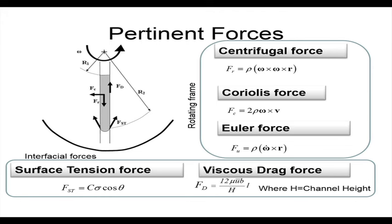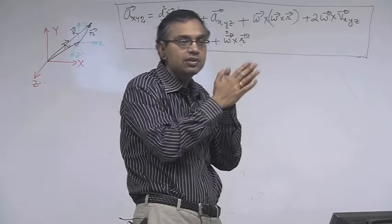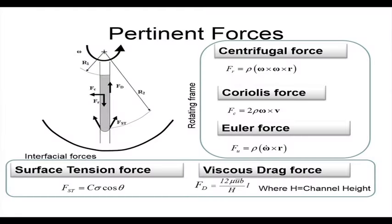If you want to achieve mixing between two fluid streams, you can use the Coriolis force effectively, because if there are transverse streams not mixing well, the Coriolis force can make them mix. The Euler force direction depends on the direction of omega-dot. In addition there are interfacial forces: surface tension force (perimeter times sigma times cos theta) and the viscous drag force.